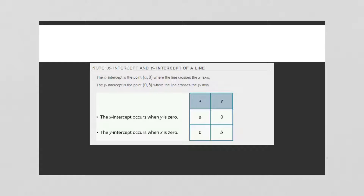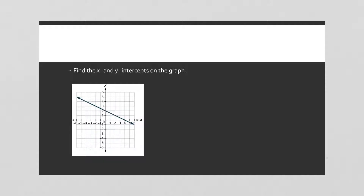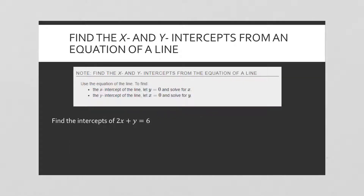This is just reminding you: the x-intercept occurs when y is 0, and the y-intercept occurs when x is equal to 0. Now let's identify the x and y-intercepts from a graph. The x-intercept is right there on the x-axis, and the y-intercept is right there on the y-axis. So our x-intercept is at (4, 0) and our y-intercept is at (0, 2).